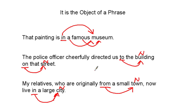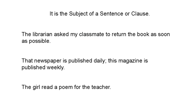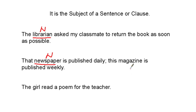Strategy five: it is the subject of a sentence or a clause. By being the subject, it is what in the sentence is doing or performing the action. Example: 'The librarian asked my classmate to return the book as soon as possible.' Who is doing the asking? The librarian is doing the asking — that makes it the noun. 'That newspaper is published daily. This magazine is published weekly.' What is being published? The newspaper is performing the action — it is the noun. The magazine is also performing the action — it is also a noun. 'The girl read a poem for the teacher.' Who is performing the action? The girl — she is the noun.